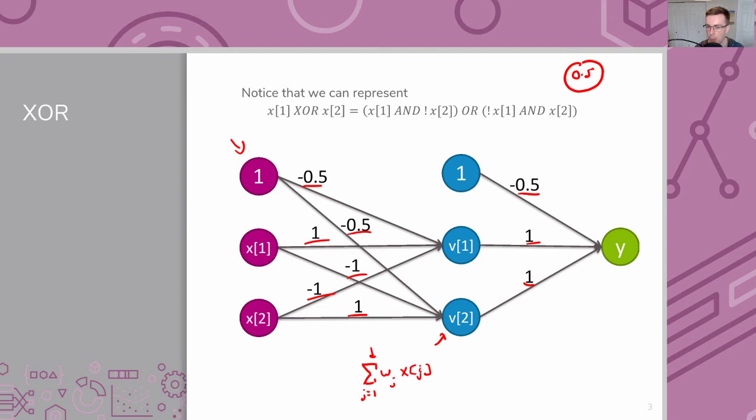Once you get that weighted sum value, you then pass it to your activation function. We talked about lots of activation functions. So you take your sum and you feed it into your activation function G. We talked about the sigmoid, we talked about the step function, the one that goes to 0, 1. All of them are very widely used. I'd say the sigmoid is probably one of the most popular ones.